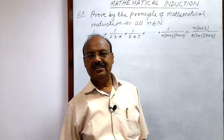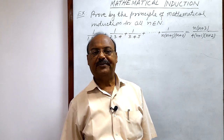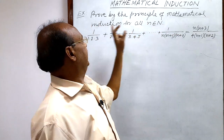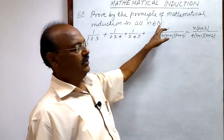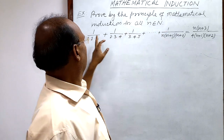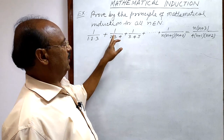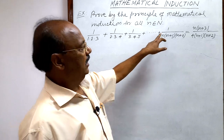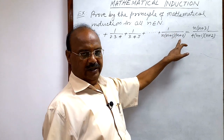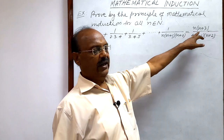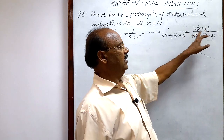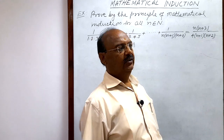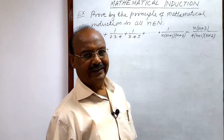Welcome students. Let us see a very interesting and important question from the chapter Mathematical Induction. The question is: prove by the principle of mathematical induction for all n belonging to the set of natural numbers — 1/(1·2·3) + 1/(2·3·4) + 1/(3·4·5) + ... + 1/(n·(n+1)·(n+2)) = n(n+3) / [4·(n+1)·(n+2)]. We have to prove it with the help of the principle of mathematical induction.